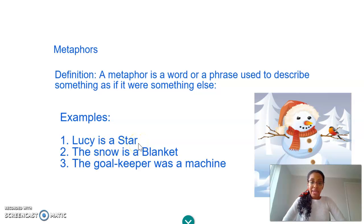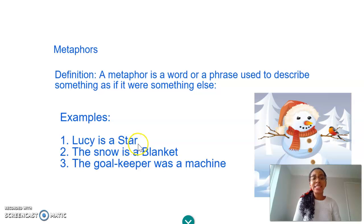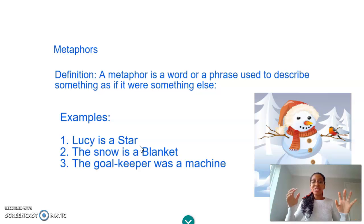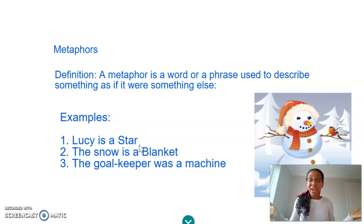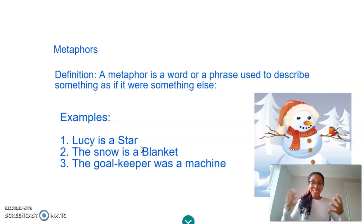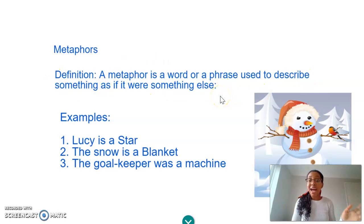So who are we talking about here? Yeah, we're talking about Lucy. And what are we saying? We're saying Lucy is a star. So what does that mean? Does it mean that Lucy is just floating around somewhere in space? Is it saying she's literally a star? No, definitely not. It's saying that Lucy — maybe she's very bright, she might be very smart, she stands out, she shines. Lucy is a star. So here we are describing something as if it were something else, without the use of 'as' or 'like', which would make it a simile.